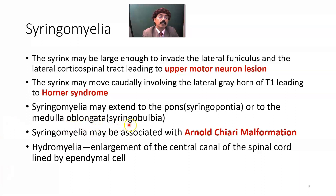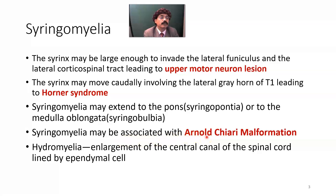Syringomyelia may extend to the pons — syringopontia — or to the medulla oblongata — syringobulbia. Syringomyelia may also be associated with Arnold-Chiari malformation, because many patients with syringomyelia have a developmental anomaly at the base of the skull, which may cause herniation of the cerebellar tonsil or vermis, leading to Arnold-Chiari malformation.